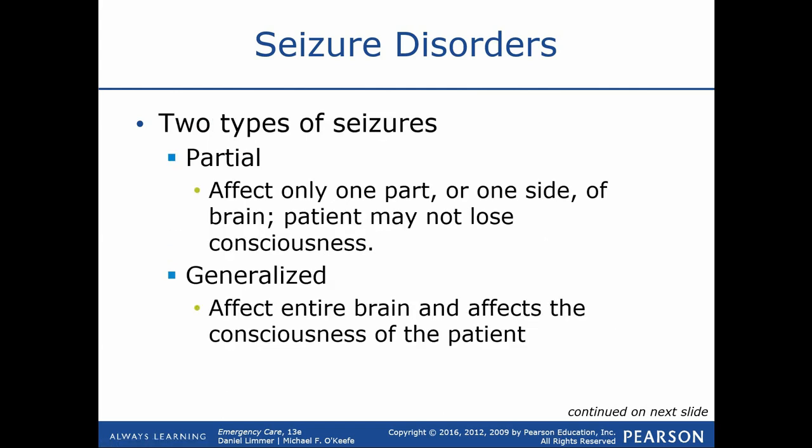We have two different types of seizures: partial and generalized. A generalized seizure is what you're used to seeing — the patient falls down and begins convulsing with all the muscles in their body shaking. That's a generalized seizure, also called a grand mal. A partial seizure is limited to a certain area of the body and may or may not be associated with loss of consciousness. Theoretically, a patient could be sitting there talking while having a seizure focused only in their arm, or maybe an eye is twitching — those are forms of small or partial seizures that don't necessarily include loss of consciousness.